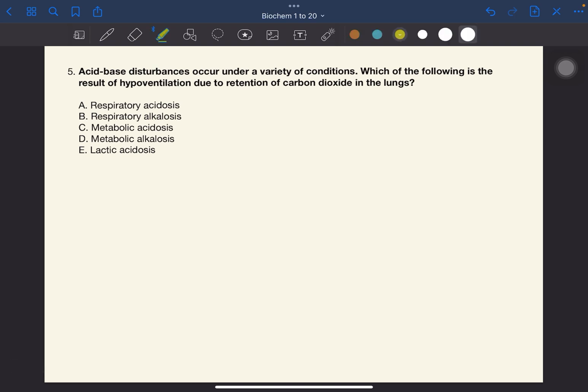Number five. Acid-base disturbances occur under a variety of conditions. Which of the following is the result of hypoventilation due to retention of carbon dioxide in the lungs? The answer to this one is A, respiratory acidosis. It was first established that carbon dioxide is acidic. And when a person is hypoventilating, hypo, it means that their breathing is too shallow or slow to meet the needs of the body. Meaning, the lungs cannot remove enough of the carbon dioxide. And the carbon dioxide levels rise and nagbe-build up yung acid inside the lungs, which causes respiratory acidosis.